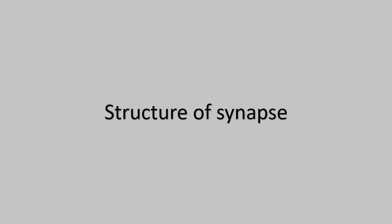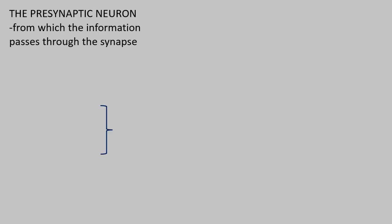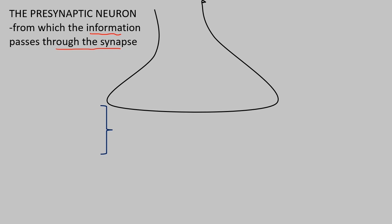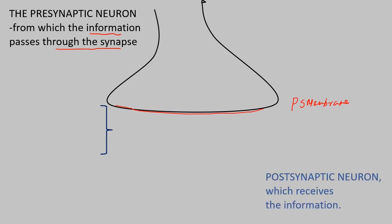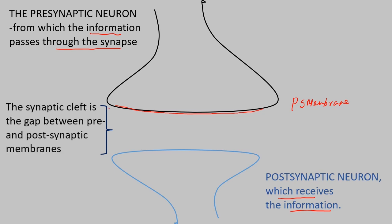Now we will talk about the structure of the synapse. One synapse has a pre-synaptic neuron — the neuron from which information passes through the synapse. The pre-synaptic terminal releases neurotransmitters. This is the pre-synaptic membrane. Then there is a post-synaptic neuron, a synaptic and post-synaptic membrane, and the synaptic cleft between them.